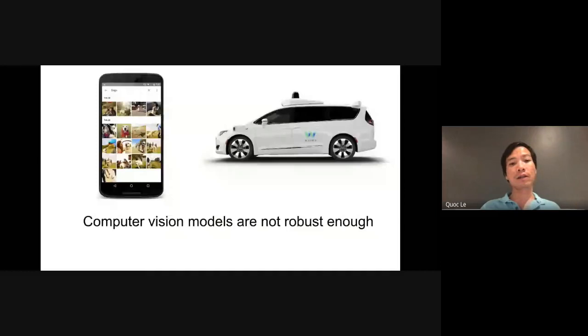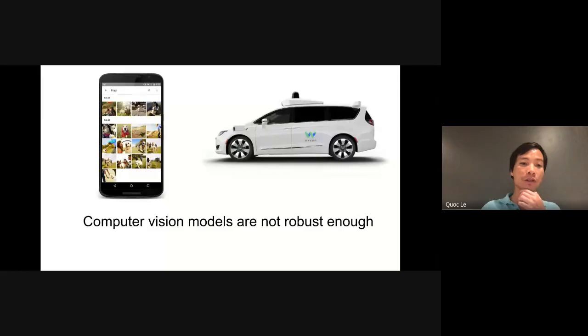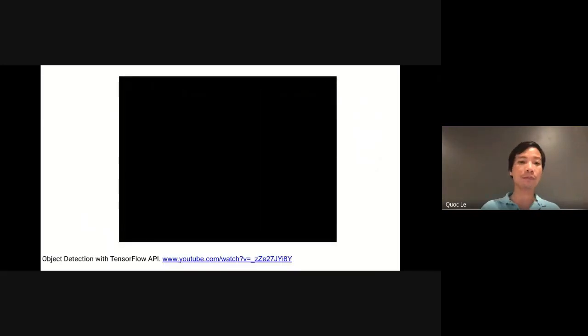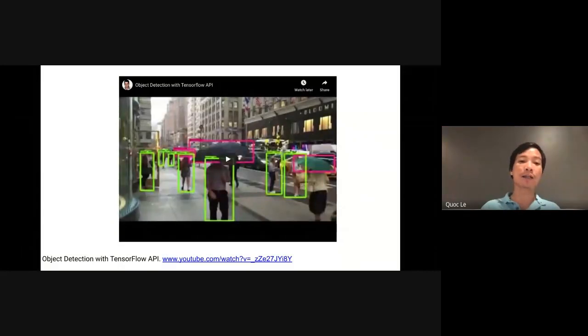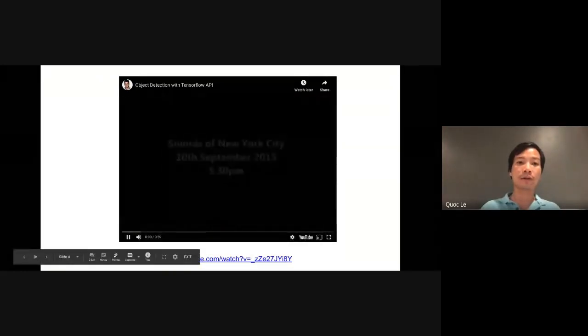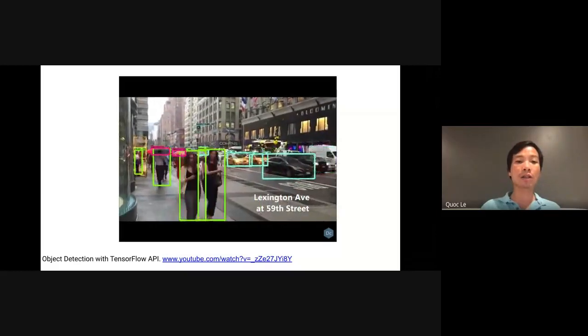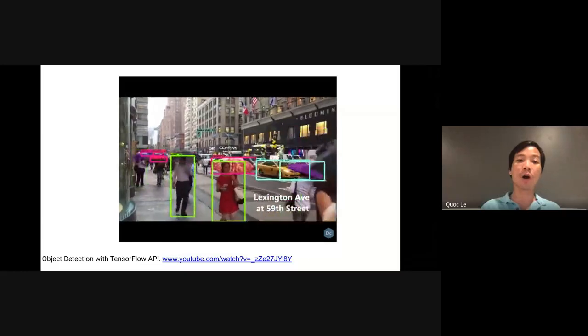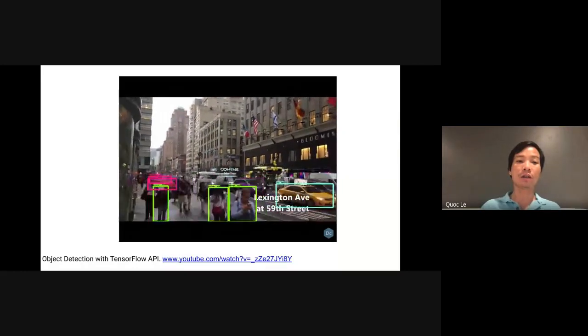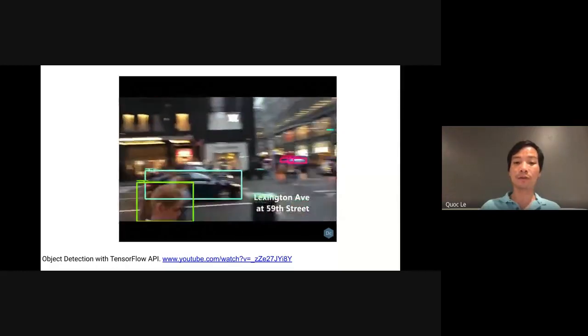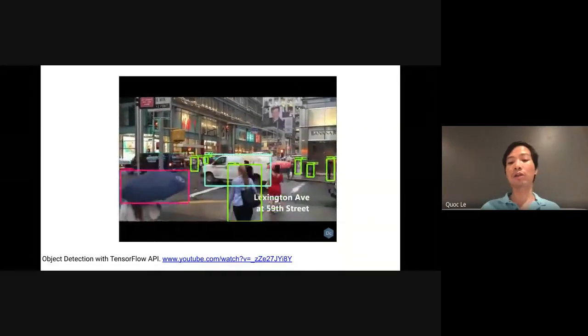The rapid progress has enabled many important applications. For example, at Google, we use the models for image search and self-driving cars. However, in practice, we observe that these models are not robust enough. If you apply state-of-the-art object detection to a video, you may see that the detections can be quite unstable, and the bounding boxes can change from one frame to another. As you can see here, from one frame to another, the bounding boxes change.